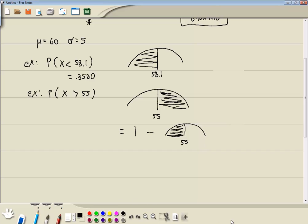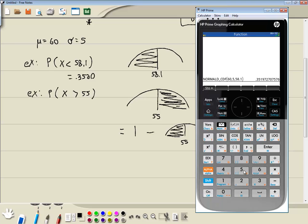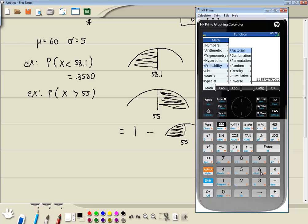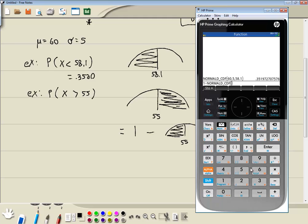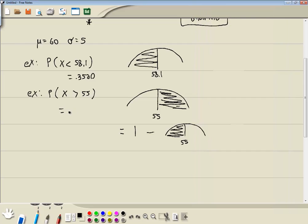So let me go back to the calculator. I'm going to do 1 minus, and then choose my toolbox. I'm going to choose 5 for probability, 6 for cumulative, 1 for normal. Put in my mean first, which is 60, comma, standard deviation which was 5, comma, and then we'll put in 55. And press enter. And rounded to 4 decimal places, we've got .8413.